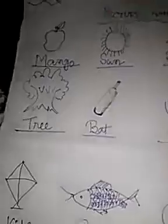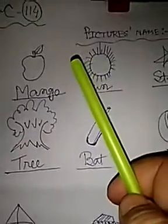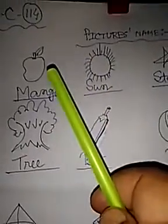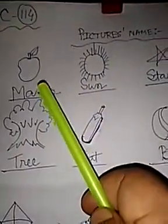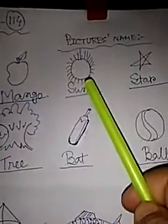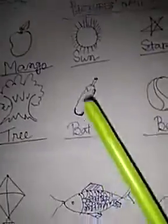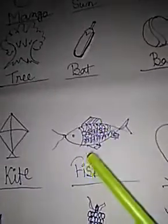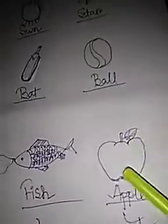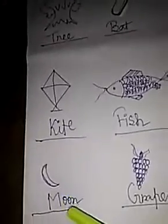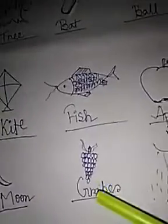So kids, I am doing it from the very beginning — that's revision. Mango, Sun, Star, Tree, Bat, Ball, Kite, Fish, Apple, Moon, Grapes, Rain.